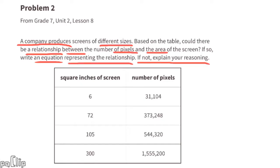Problem number two, from 7th grade Unit 2 Lesson 8: a company produces screens of different sizes. Based on the table, could there be a relationship between the number of pixels and the area of the screen? If so, write an equation representing the relationship. 6 square inches of screen times 5184 equals 31,104 pixels.